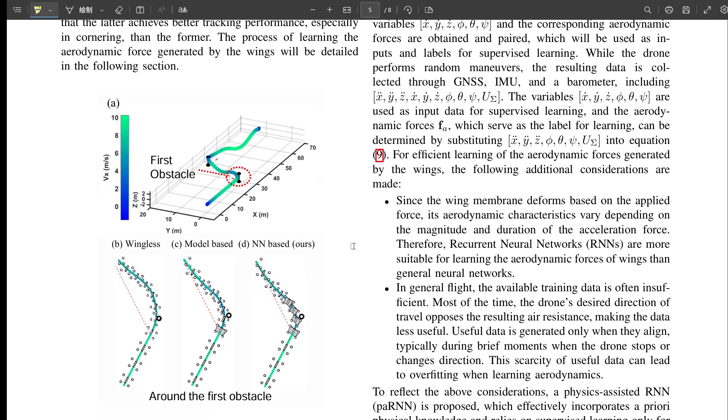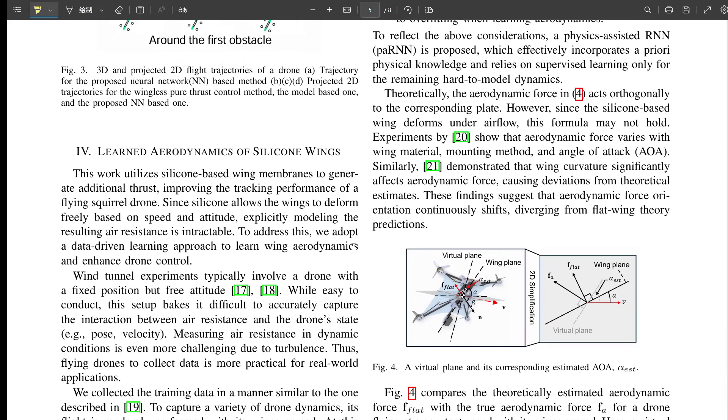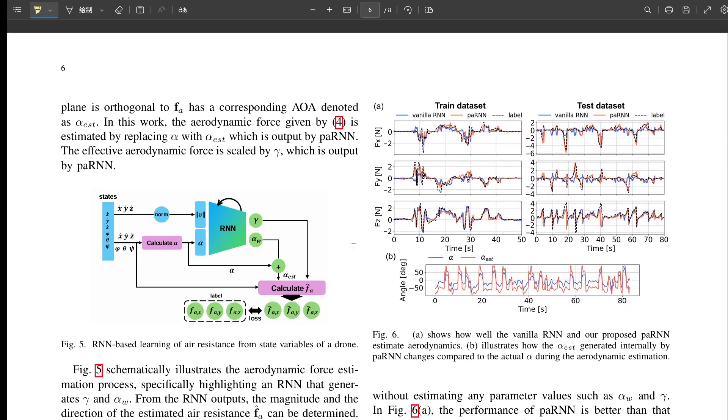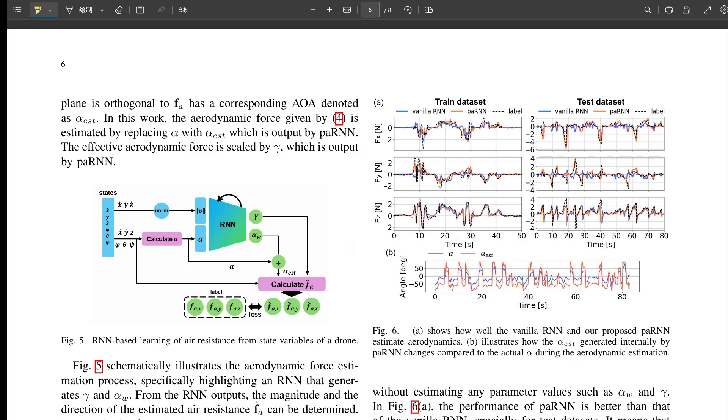That expansion of capability is a core academic point here. That's a really clear way to put it. Okay. The TWCC framework is impressive. But for it to work, especially with these floppy silicone wings, you need to know how those wings are going to behave aerodynamically. Right? Yeah. Which brings us to the modeling part using this physics-assisted recurrent neural network, the peron-N. That's a mouthful. It is, but it's tackling a really tricky problem.